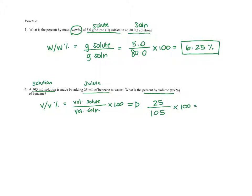The units are fine as long as they're the same - milliliters over milliliters. So I do 25 divided by 105 times 100, and I get 23.8%. That's the volume percent for this solution.